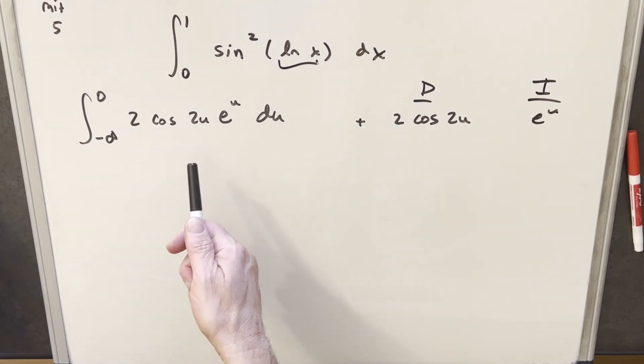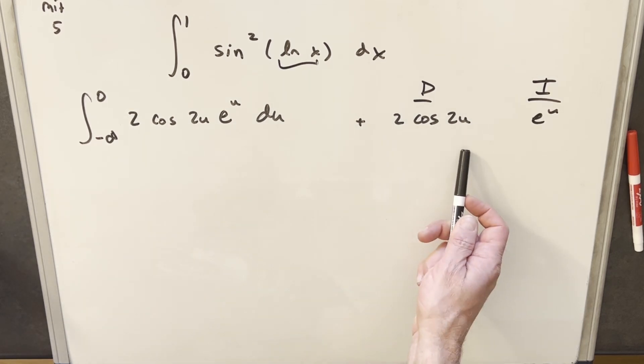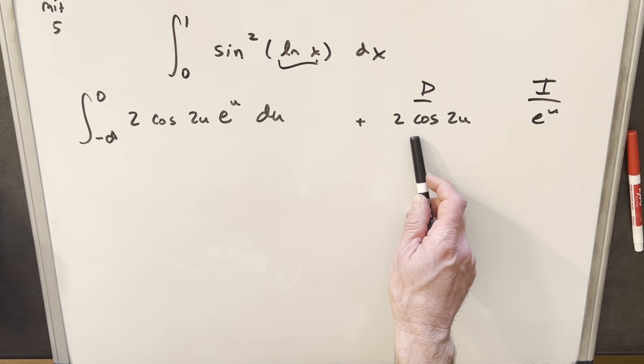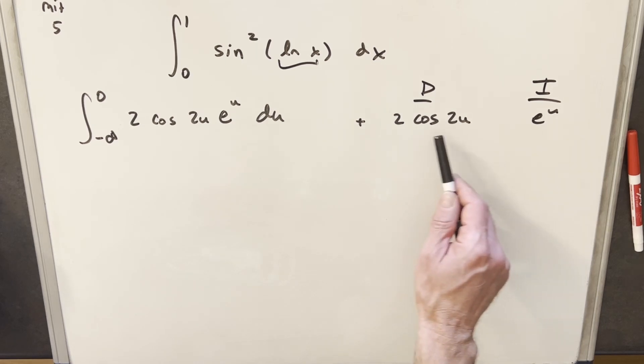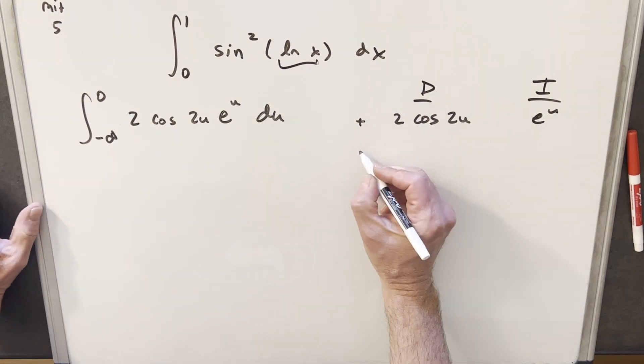Okay, so now continuing with the integral that we found in the last board. I just got all that other stuff out of the way because it's all 0. But what you'll notice is this is actually a perfectly good place to continue with integration by parts again. We could have actually just kind of continued with the table. I just wanted to clean it up. But we're going to do our integration by parts table and continue on where we're going to differentiate 2 cos 2u and integrate e to the u.